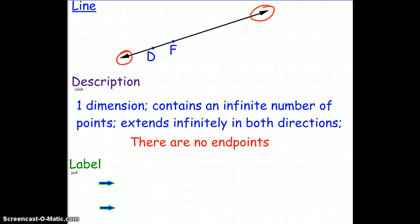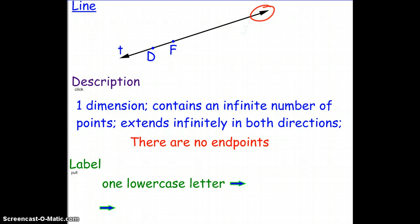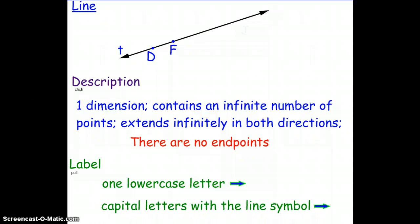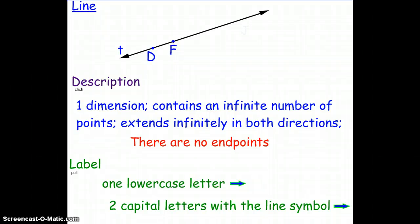Now when we want to be able to label a line we have two options. Option one is to use one lowercase letter. So here we have a lowercase T and we could say that this is line T. But in addition we could use two capital letters with a line symbol written above them. So two points that would be on this line, which is where we get our capital letters from, would be line DF. Notice the symbol above it looks exactly like a line. We could also say line FD.